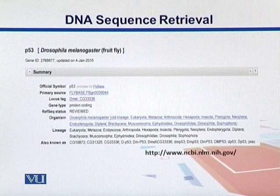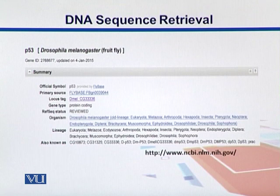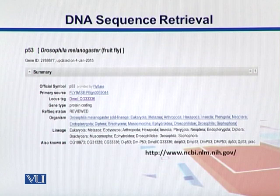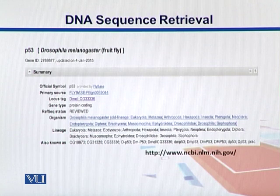Moving down, we click on the first gene and come to this page. It's a big page but I've chopped it into small sections. Here we see the summary of this gene. The official symbol is P53, provided by FlyBase, which is also written as the primary source — a database that stores the genome of the fruit fly Drosophila. Then we have the locus tag and the gene type, which is protein coding.